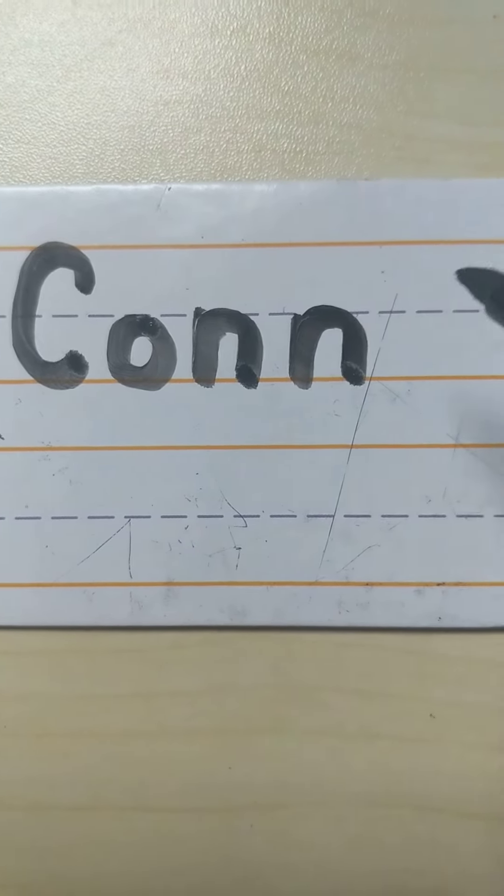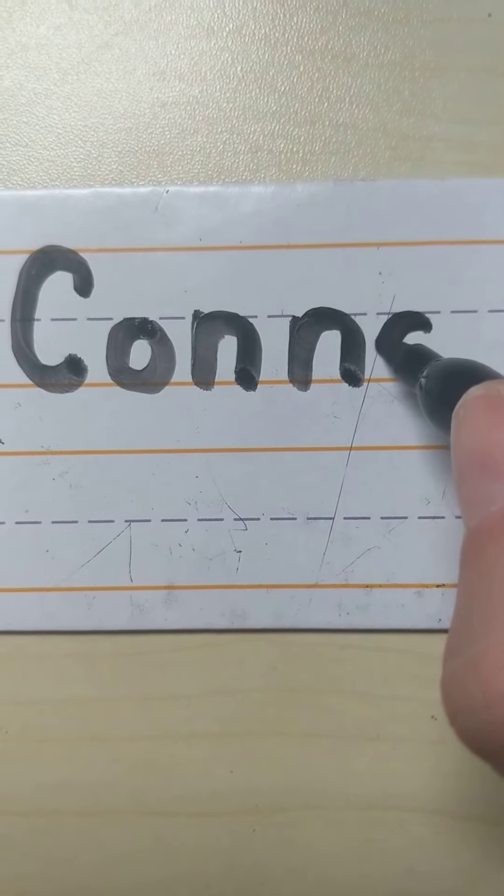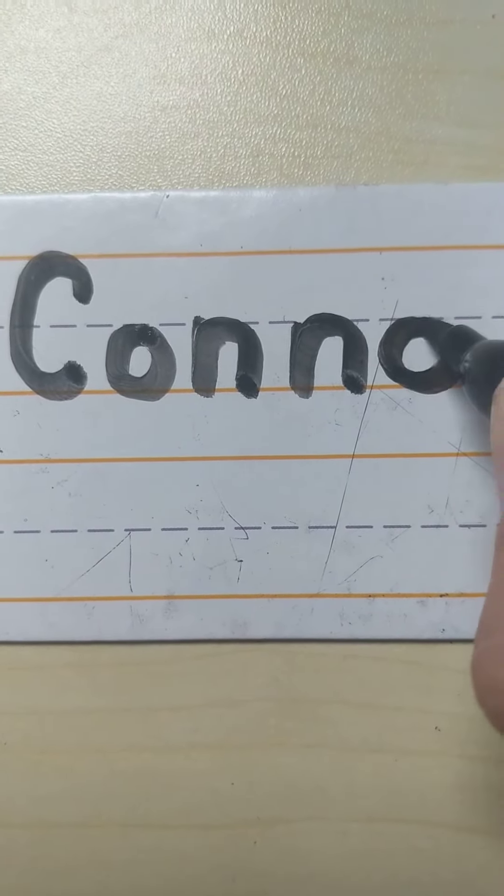Another O, start just below that dotted line. Magic C to the ground, close it up.